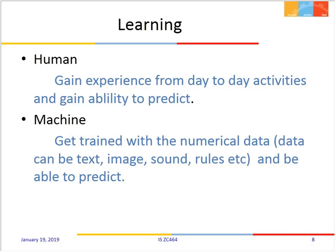We have to understand the human brain at least to some extent and then generate programs that behave in a human-like way of responding to things. Human brain works differently — medical scientists are still trying to find out how it works. It does not work exactly like an algorithm or an if-else condition. When we train a machine, it behaves similar to a human to some extent, but its algorithms are different. A machine gets trained with numerical data — text, image, sound, rules, etc. — and is able to predict.